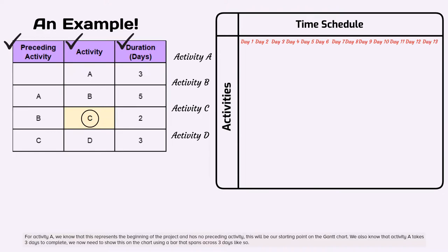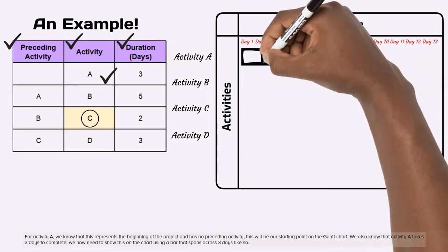For activity A, we know that this represents the beginning of the project and has no preceding activity. This will be our starting point on the Gantt chart. We also know that activity A takes three days to complete. We now need to show this on the chart using a bar that spans across three days like so.